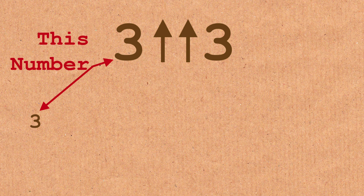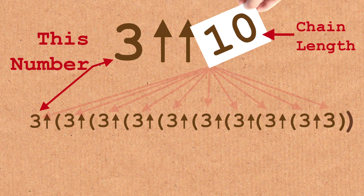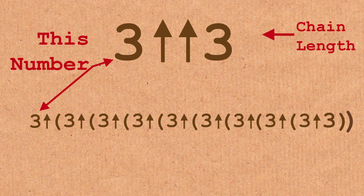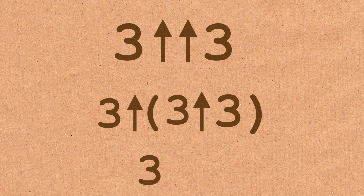Now, how about 3 double arrow 3? When we have a double arrow, we're essentially saying: take the leading number and string it out with single arrows, and do it this number of times. So if the second number had been, say, 10, we'd have had 10 3s like this. Luckily, the second number was just a 3, so we have a manageable 3 3s: 3 arrow 3 arrow 3. We know what a single arrow means, so that's 3 to the power of 3 arrow 3.